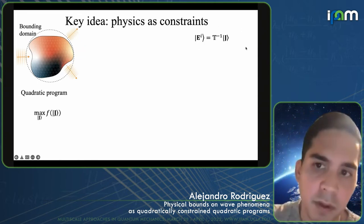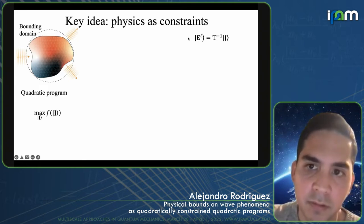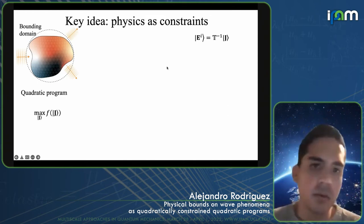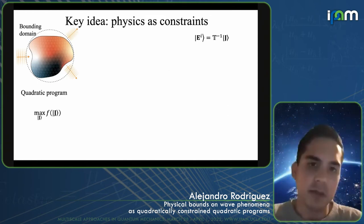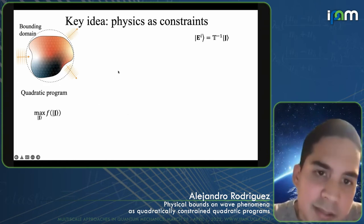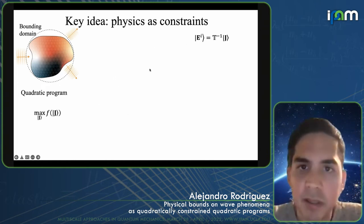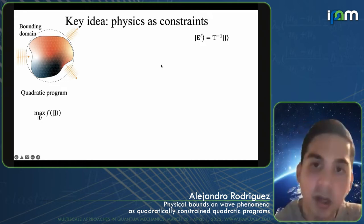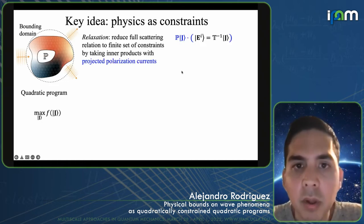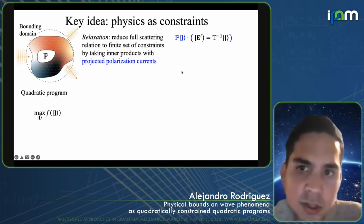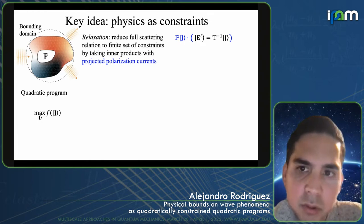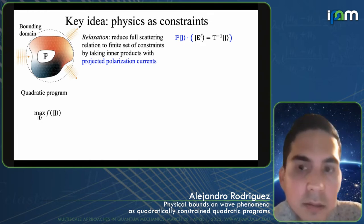This is just a restatement of the problem — it's just a statement of Maxwell's equation in integral form. If you do that, you don't get anything; you're just basically solving the original structural optimization problem. The key idea — it took us a few years to realize this simple idea — is just to consider a relaxation: to relax the relationship between the bound current and the incident field that created it.